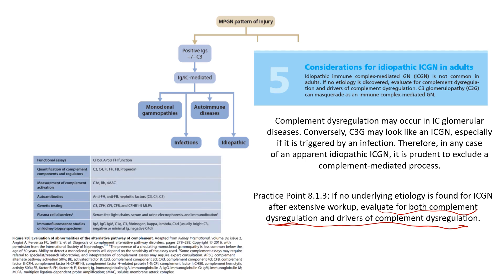To investigate for abnormal complement regulation, there are lab and genetic panels that are not widely available and are present only in specialized centers. Their main importance is in predicting the risk of recurrence after transplantation, as some genetic abnormalities carry a higher recurrence rate post-transplant while others do not.